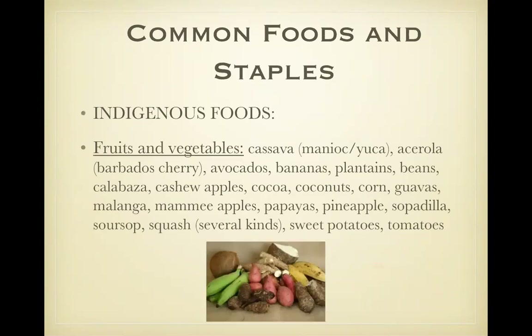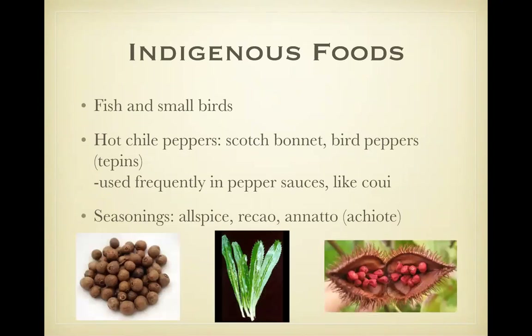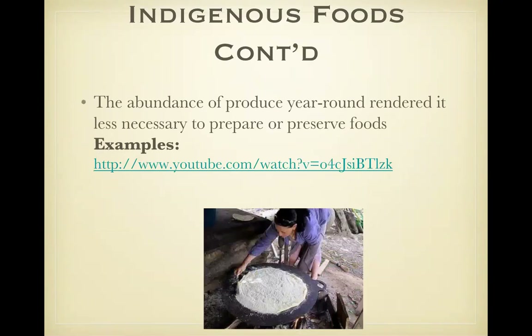Common foods. There are many indigenous foods to the area and many staples, including various fruits and vegetables. Since they're islands, fish and small birds are very plentiful. Hot chili peppers and bird peppers are common seasonings. I may ask you about indigenous seasonings to the Caribbean islands — they use allspice, annatto, and rakau. They have produce year-round. One of their staples is cassava; they press it, dry it, grate it, and fry it into a flat loaf or bread.